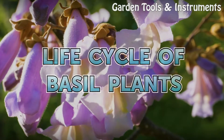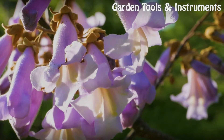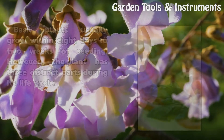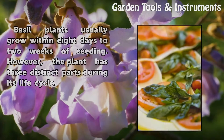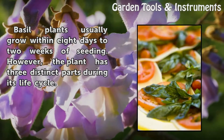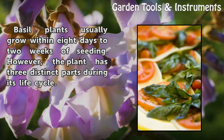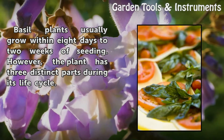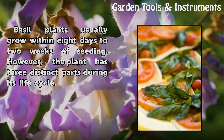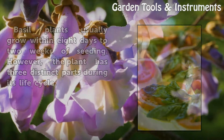Life Cycle of Basil Plants. Basil plants usually grow within eight days to two weeks of seeding. However, the plant has three distinct parts during its life cycle.